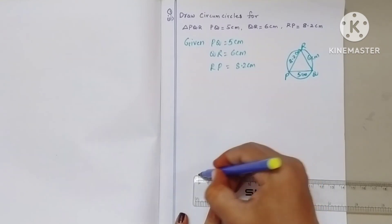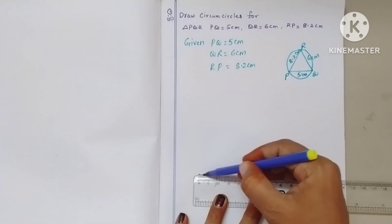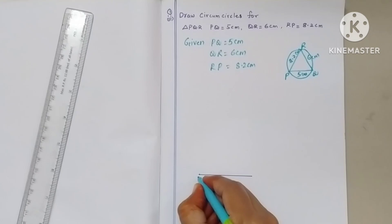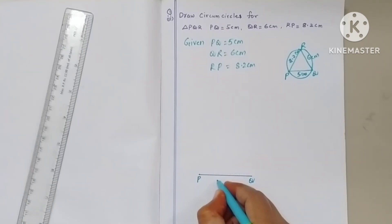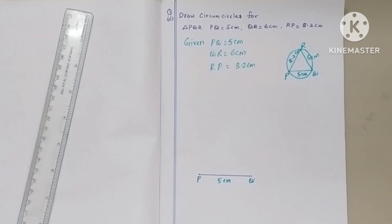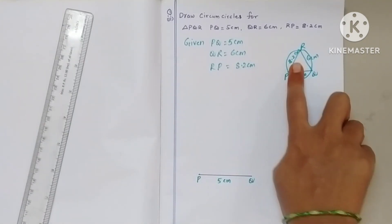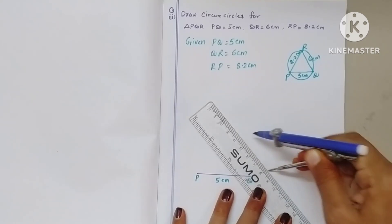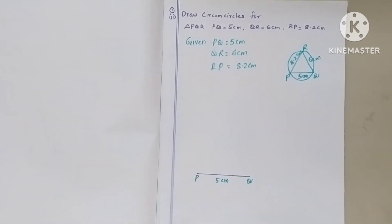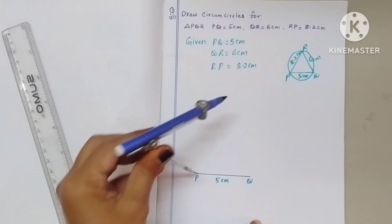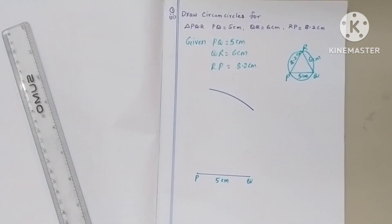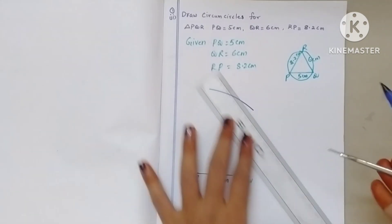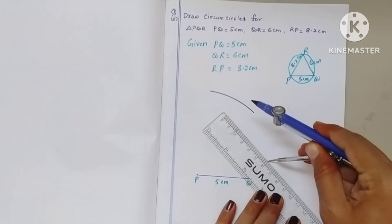Take the scale and draw a line segment PQ equals 5 centimeters. Put one point at 0 and another point at 5 and join these two points. Now PQ is 5 centimeters. For PR, which is 8.2 centimeters, take the compass and measure 8.2 centimeters, then by taking P as center draw an arc. For QR, which is 6 centimeters, measure 6 centimeters radius with the compass.